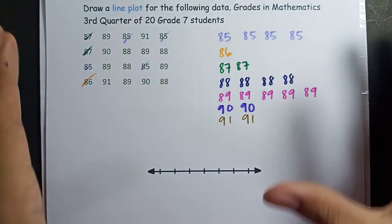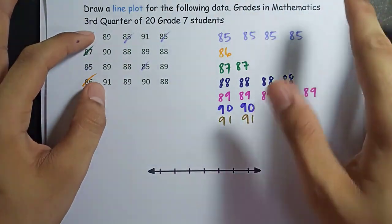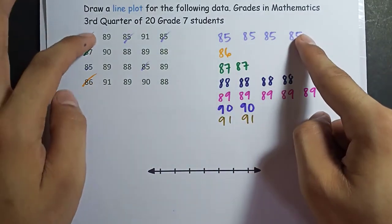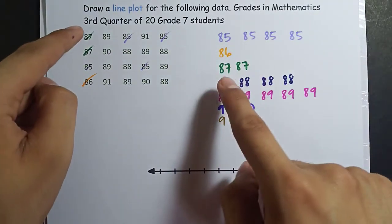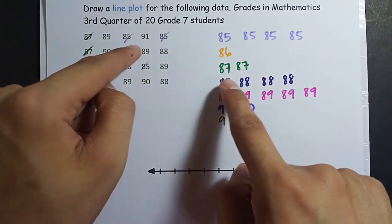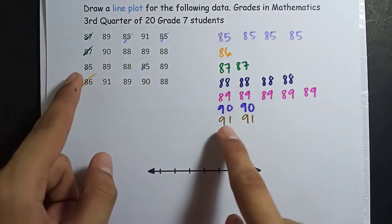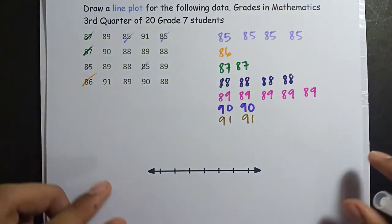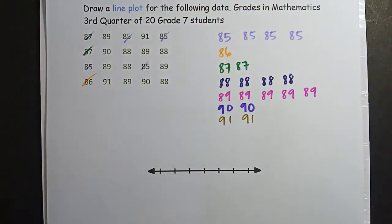I am done arranging this data set. I arranged it in ascending order. So we have 85. We have 1, 2, 3, 4, 4, 4, 5. As you can see here, I marked them. One 86, two 87, four 88, five 89, two 90, two 91. So what I'm gonna do here is to make a line plot for this data set.